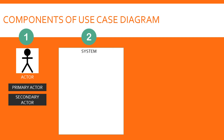Component number two: the system is the solution which you are developing. It can be a website, an application, or a software component, and is represented by a rectangle with the name of the solution at the top. Component number three: the use case is depicted by an oval-shaped icon and describes what the system does. A use case has a unique name describing the action taken by the actor. Use cases sit within the rectangle and form the scope of the solution being developed. Each use case maps to a functional requirement.